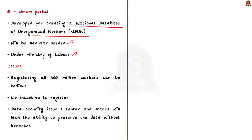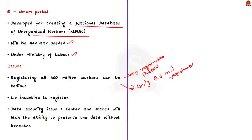The eShram portal has been developed for creating a national database of unorganized workers and is Aadhaar-seeded, under the Ministry of Labor. The author highlights several issues. First is the long-drawn nature of the registration process: there are 380 million unorganized workers, and though the portal was launched on August 26, only 0.6 million have registered so far, meaning it will take a very long time to build a complete database of the informal sector. Second, small employers like local kirana shop owners have no incentive to nudge their workers to register, and unorganized workers may not voluntarily come forward since gains are not immediate.